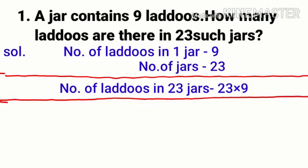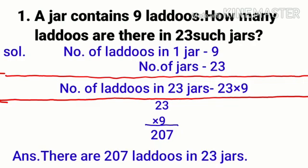This can be found by 23 × 9. We will solve it separately because the first statement has a one-digit number and the second has a two-digit number, which makes it difficult to solve together. So 23 × 9 gives 207: 3 × 9 = 27, write 7 carry 2; 9 × 2 = 18 + 2 = 20. So the answer is: there are 207 laddus in 23 jars.